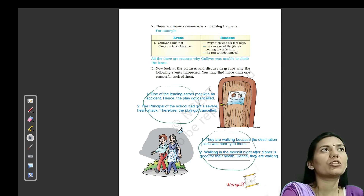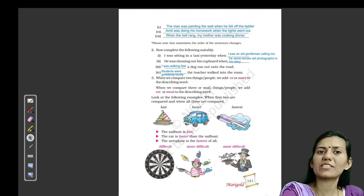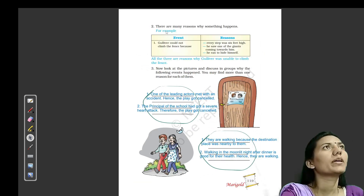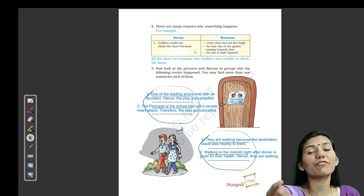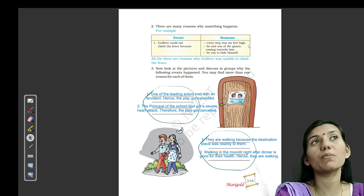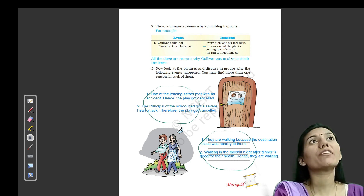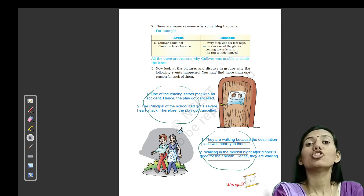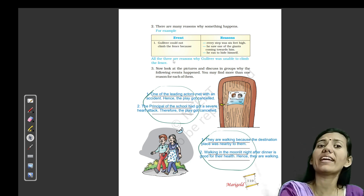This exercise is a little bit longer so we will divide it in two parts — today we will do half and in the next class we will do the other half. There are many reasons why something happens. For example, Gulliver could not climb the fence because every step was six feet high, which is much higher than his height. He saw one of the giants coming towards him, so he ran to hide himself. All three are reasons why Gulliver was unable to climb the fence.